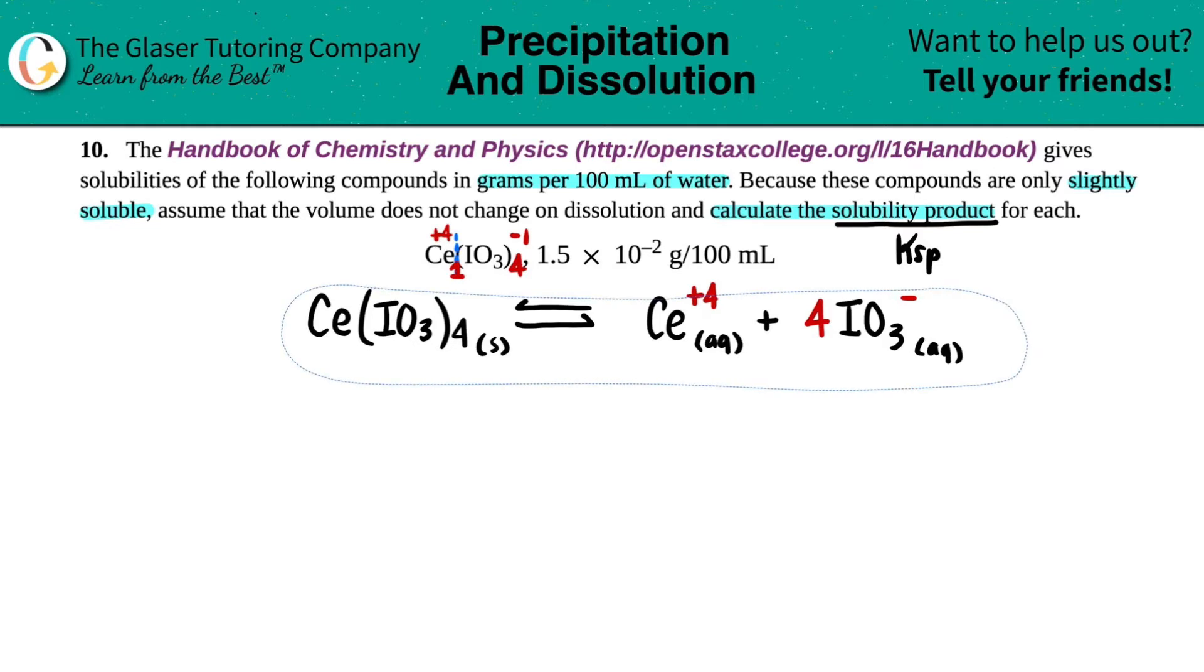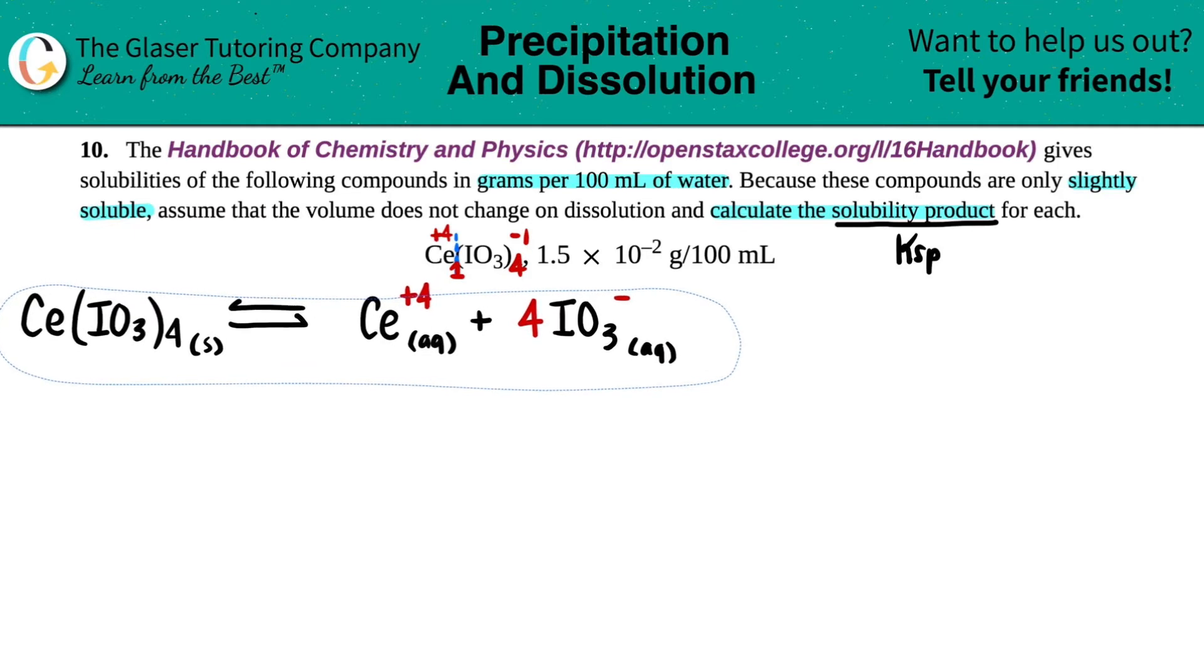Let's write out what the KSP expression is. The KSP is pretty simple. KSP is always equal to the concentration of the products, right? Remember, it's generally products divided by the reactants. But with KSPs, the reactants is always going to be a solid. And remember, no solids are allowed here.